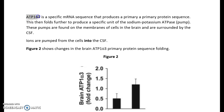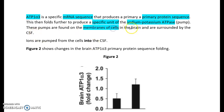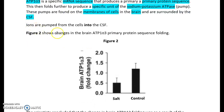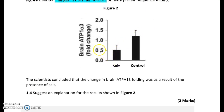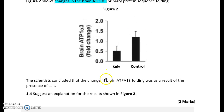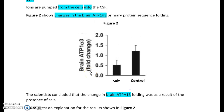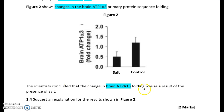The next question covers ATP1-alpha-3, which is a specific mRNA sequence that produces a primary protein sequence. This then folds further to produce a specific unit of the sodium-potassium ATPase pump. These pumps are found in the membrane of cells in the brain surrounded by cerebrospinal fluid, and ions are pumped from the cells into the cerebrospinal fluid. Figure two shows the salt group has less ATP1-alpha-3 protein folding than the control group, meaning a salty diet decreases brain ATP1A3 protein folding.